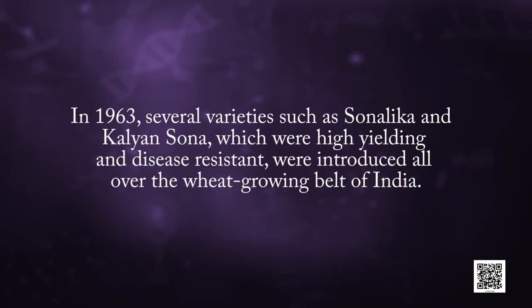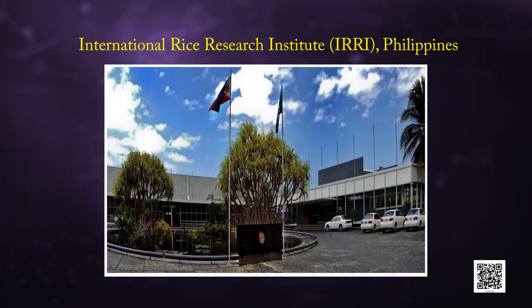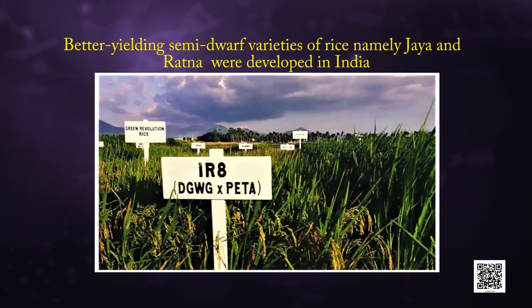Famous Nobel Prize winner Norman E. Borlaug at the world-famous institution, the International Center for Wheat and Maize Improvement in Mexico, developed this semi-dwarf variety of wheat. In 1963, several varieties such as Sonalika and Kalyan Sona, which were high yielding and disease resistant, were introduced all over the wheat growing belt of India. Similarly, semi-dwarf rice varieties were derived from IR8, developed at the International Rice Research Institute in Philippines, and Taichung Native 1 from Taiwan. Better yielding semi-dwarf varieties of rice, namely Jaya and Ratna, were developed in India.